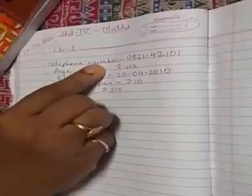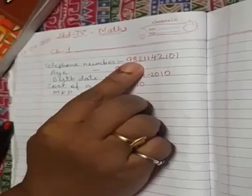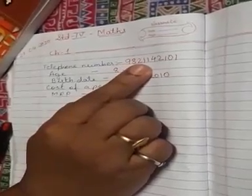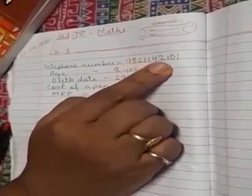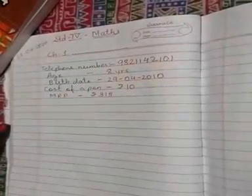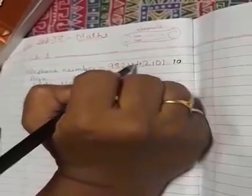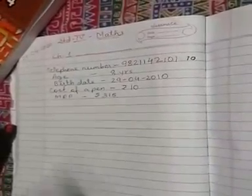Now, telephone number. So your telephone number is 9821142101. Can you count how many digits are there in that number? Telephone number? Yes, 10. 1, 2, 3, 4, 5, 6, 7, 8, 9, 10. Everyone knows that mobile number is a 10 digit number.